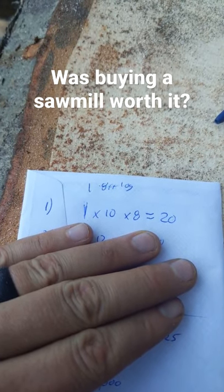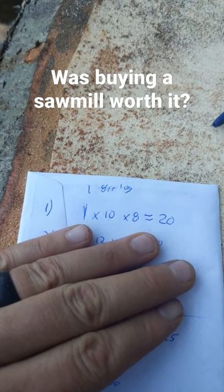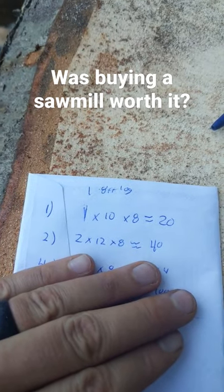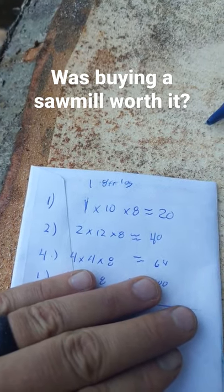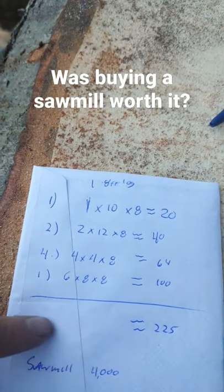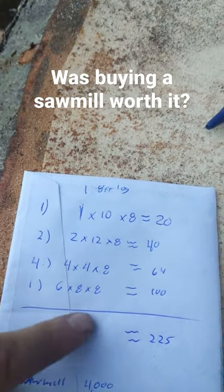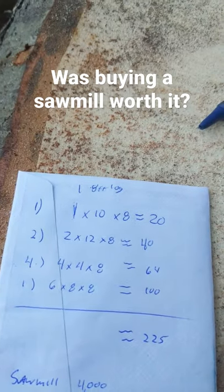So out of the beech we got one 1x10x8 which is $20 at Home Depot, a 2x12x8 which is $40, four 4x4s which is $60, and this is two 2x12s and then one 6x6x8 which looks like it's $100 at Menards.